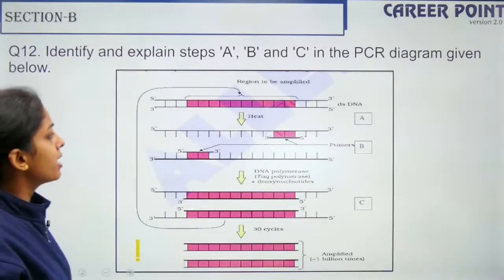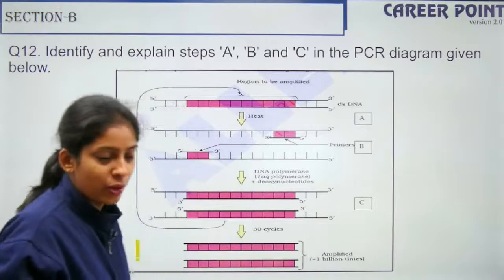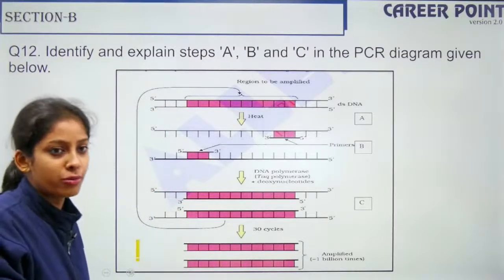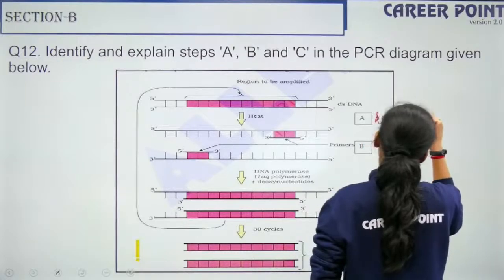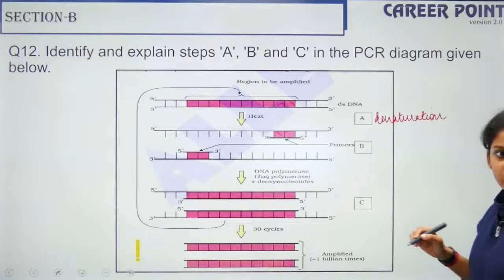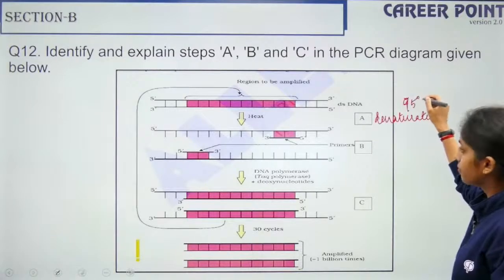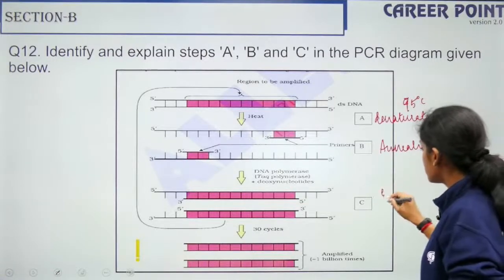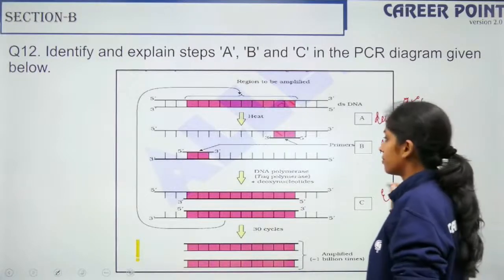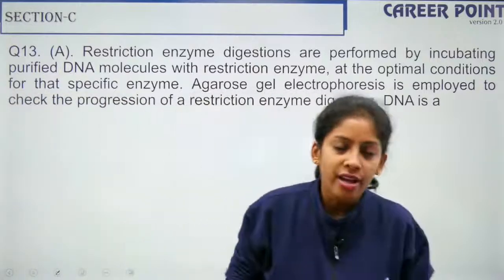Question 12: 'Identify and explain steps A, B, and C in the given PCR diagram.' Step A is denaturation — the two DNA strands unwind at 95°C. Step B is annealing — primers come in and bind to the template strands. Step C is extension — the new DNA strand is synthesized. This completes Section B.